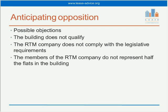Why would a landlord seek to object to the Right to Manage? There are statutory grounds — where the landlord says the building doesn't qualify, you haven't complied with legislative requirements, or that the membership criteria haven't been met, as we looked at in RTM Part 1. These are grounds that could fuel a landlord's objections where the RTM has failed to comply with statutory requirements, or the building itself is not a qualifying building.